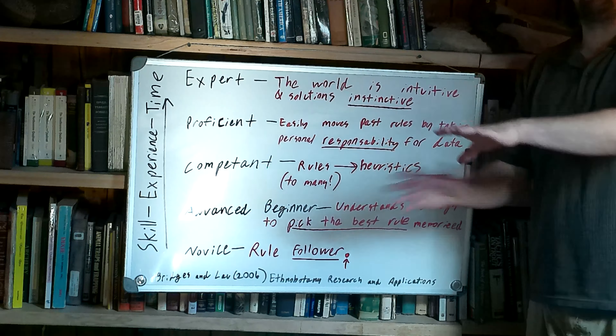You can think of this as: novice is your bachelor's of science, advanced beginner is your master's degree, competent is your PhD, and expert is your 20 years of experience in the field.